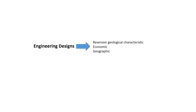Bear in mind that early engineering design should be in connection with the reservoir geological characteristics as well as the economic and geographic surface conditions. If you want to design something, you should pay attention to the reservoir geological characteristics and the geographic surface conditions. Sometimes you have a good design, but it's not possible — the geographic location doesn't allow you to do it. For example, if you want to do some IOR or EOR, you need water or some kind of chemical, and if the chemical is not available, that design is not good.